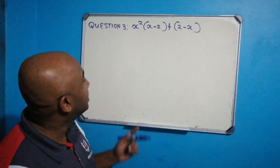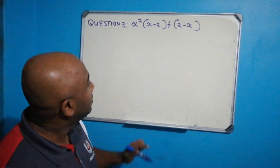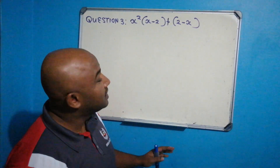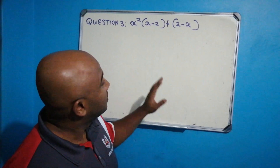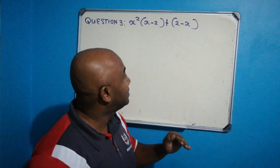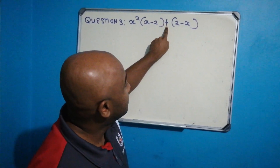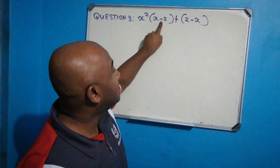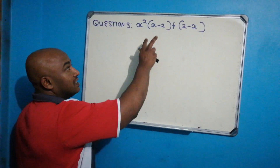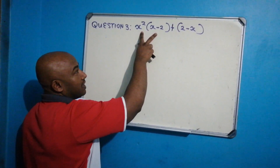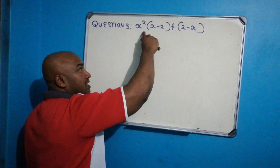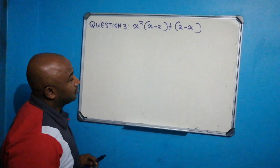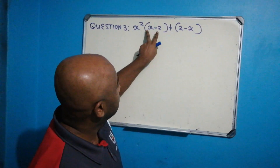Let's have a look at question number three — we had to factorize. What do we notice? How many terms do you see? Remember, terms are separated by the plus or the minus sign. This is the plus sign that separates the two terms, even though there's a minus sign inside x minus 2. The fact is that x squared is being multiplied by x minus 2, so this whole first part is term one, and this will be term two.